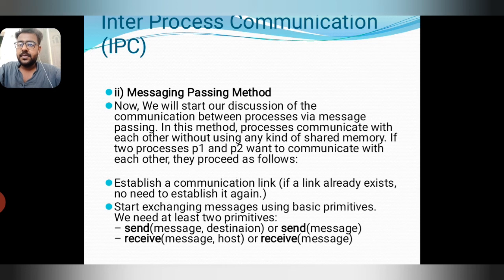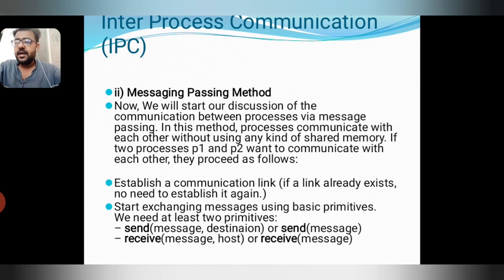Inter-process communication — message passing method. Now we will discuss communication between processes via message passing. In this method, processes communicate with each other without using any kind of shared memory. If two processes P1 and P2 want to communicate, they must first establish a communication link. If a link already exists, there is no need to establish it again. They then start exchanging messages using basic primitives: send message and receive message.